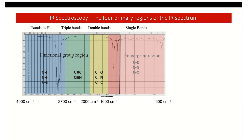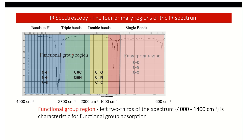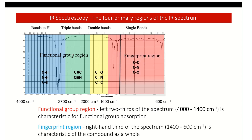We're looking at the four primary regions of the infrared spectra. Focus on O-H and N-H, C-H — atoms attached to hydrogen — then the triple-bonded region around 2000 wavenumbers, and the double-bonded region centered around 1600–1700. Below that is the fingerprint region, which we're not concerned with in this course.